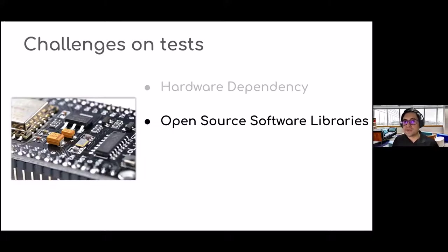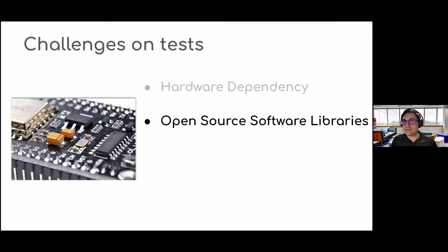The second challenge was open-source software libraries. Most IoT modules have open-source libraries, and regularly these come without automated testing. There is a wide range of test combinations and resulting scenarios when you implement them in new hardware you are building. Since we were using open-source libraries, after implementing them we had to think carefully about how to test the new combinations we had created.